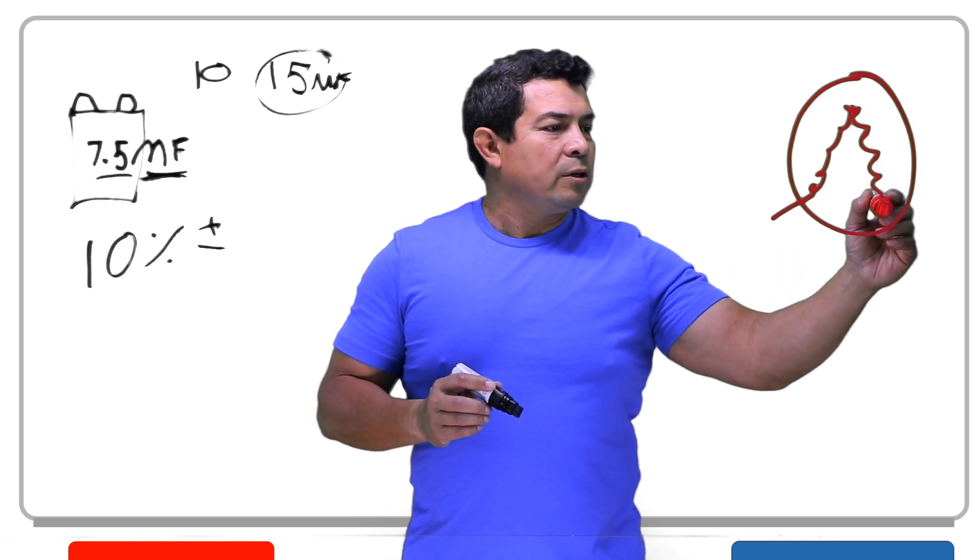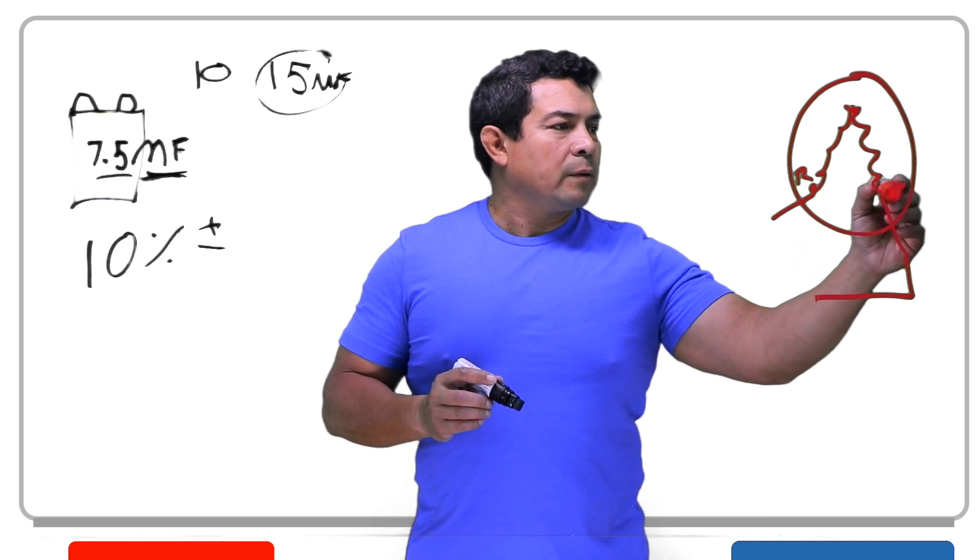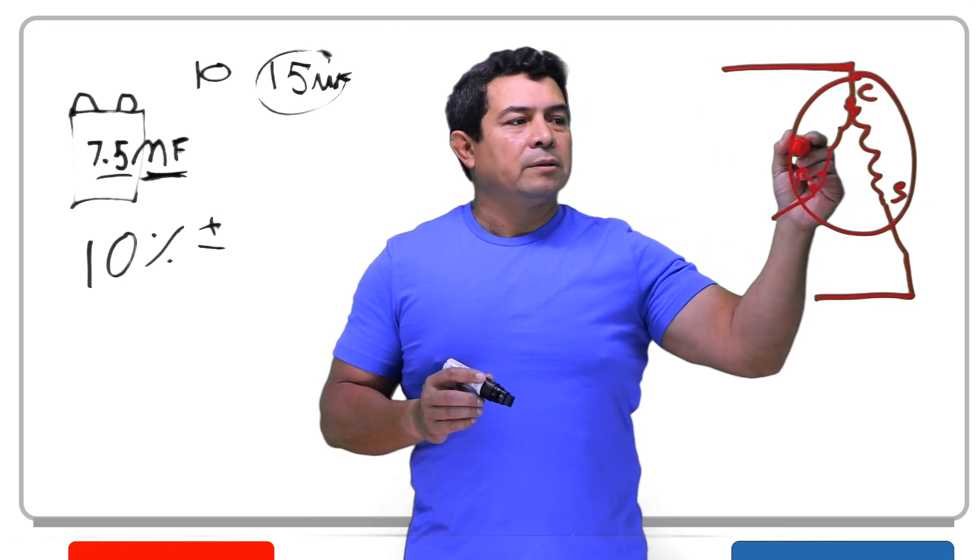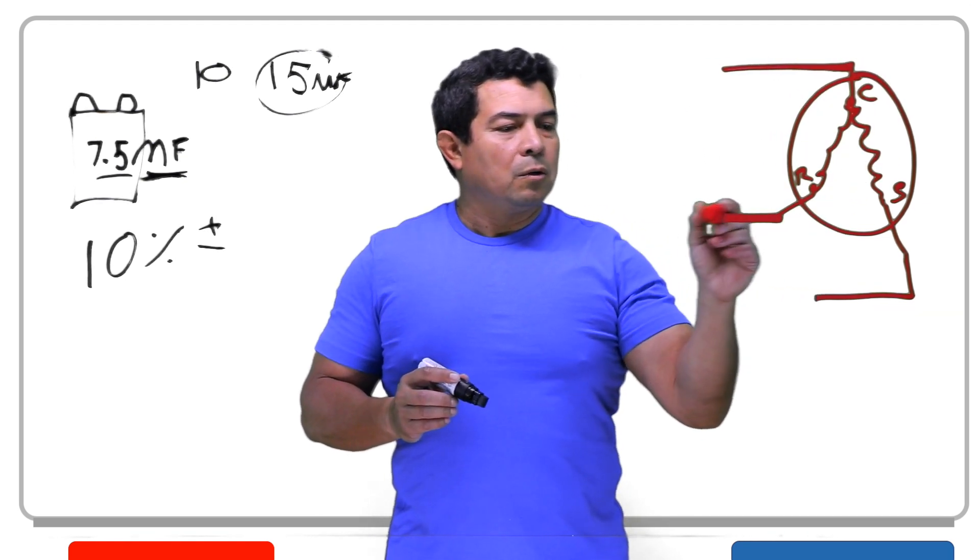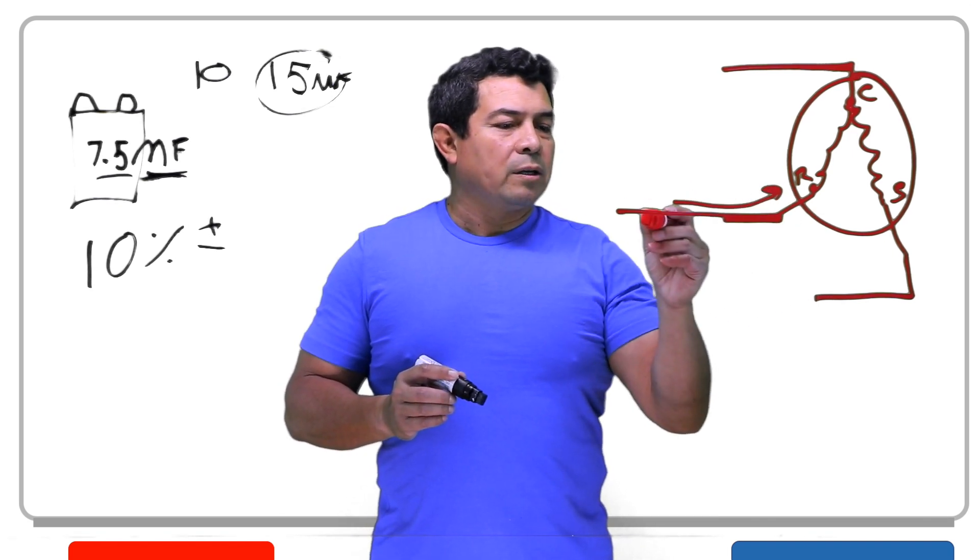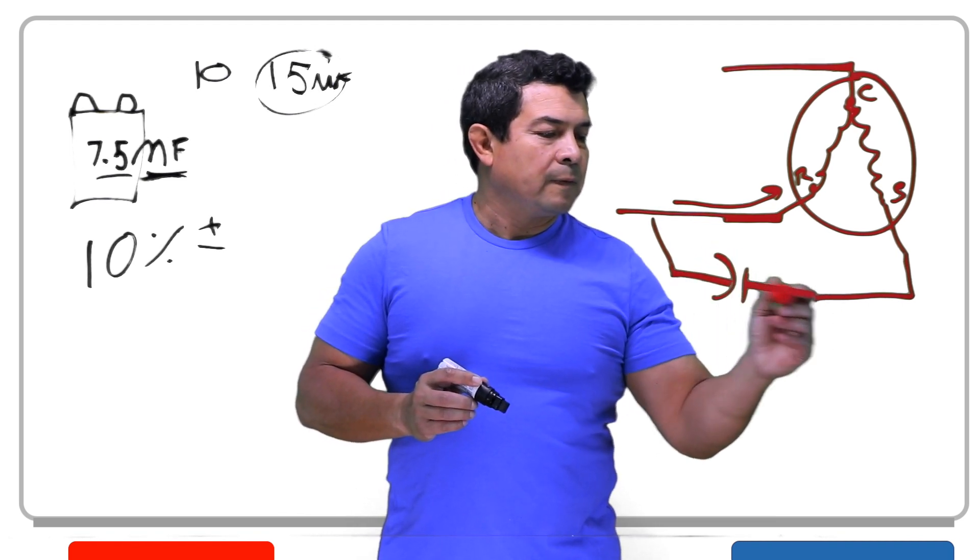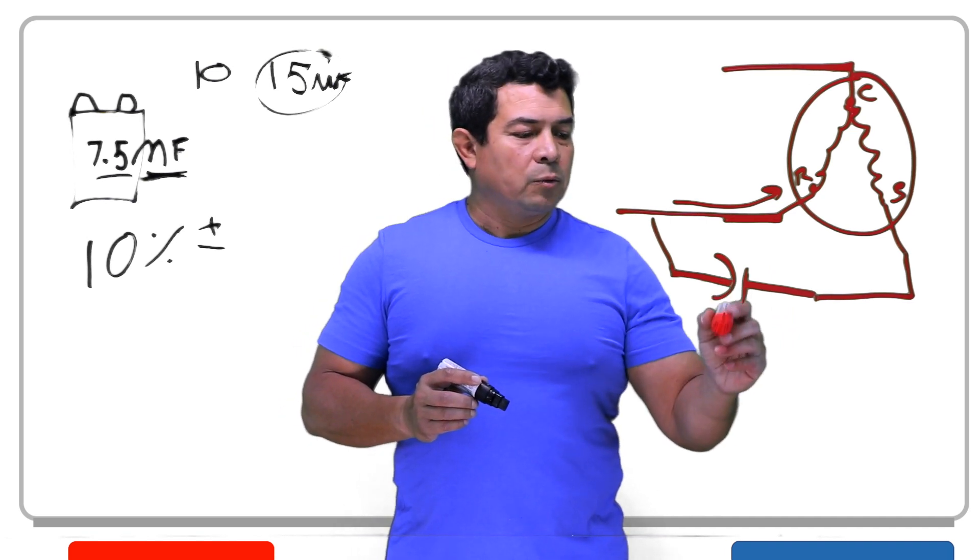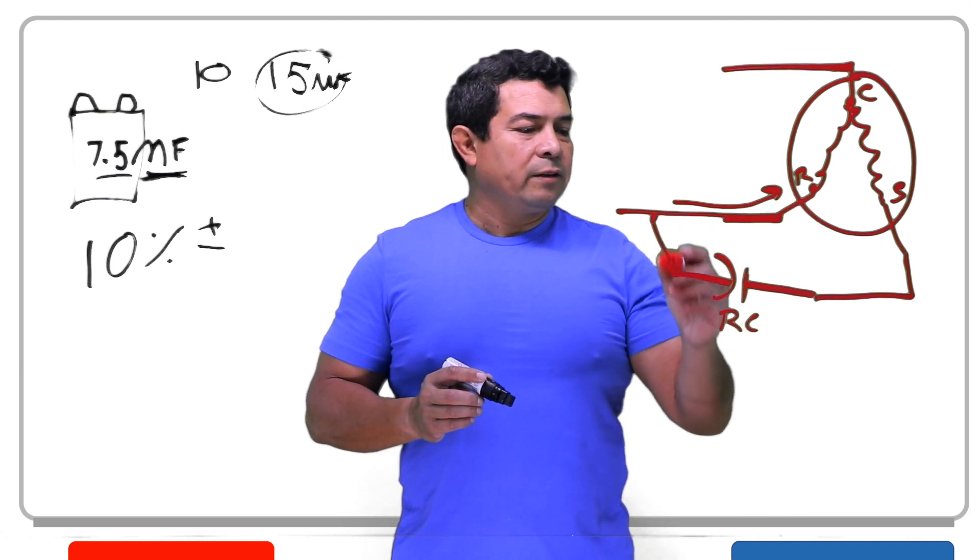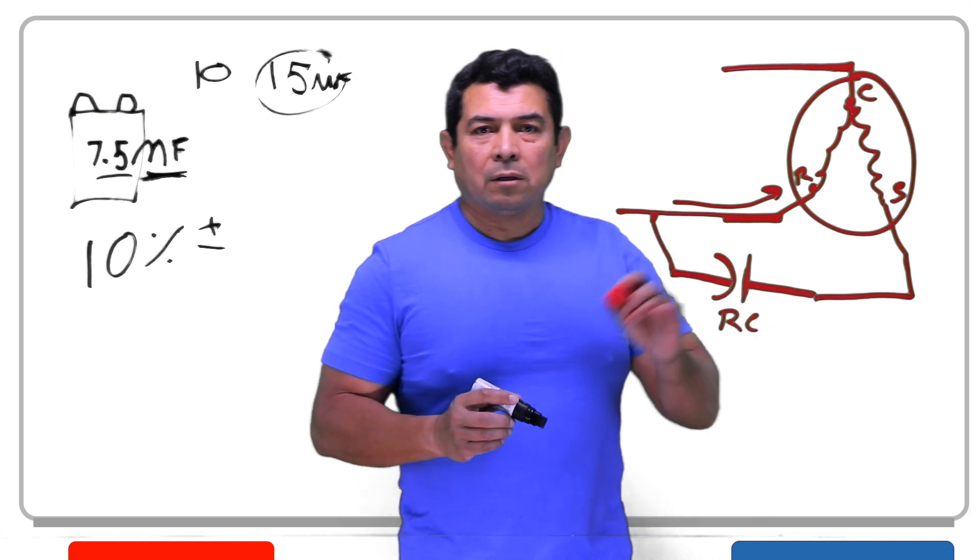Now we have in a single phase motor, we have the two windings like this. One is going to be the run winding. The other one is going to be start winding. You're going to have three connections. This one here is going to be your common. So what I always tell the guys in class is the same line that feeds the run winding always has to feed the capacitor. And this is the symbol for capacitor. This would be your run capacitor. So the same line that feeds the run winding feeds the capacitor, and the capacitor always feeds the start winding, always.